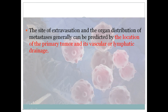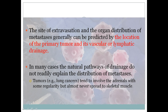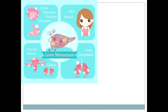The site of extravasation and organ distribution of metastasis is generally predicted by the location of the primary tumor and its vascular or lymphatic drainage — wherever there is vascular or lymphatic drainage, that will be the first site tumor cells go to. However, in many cases the natural pathway of drainage does not readily explain the distribution of metastasis. For example, lung cancer involves the adrenals with some irregularity but almost never spreads to nearby skeletal muscles. This is called organ tropism.